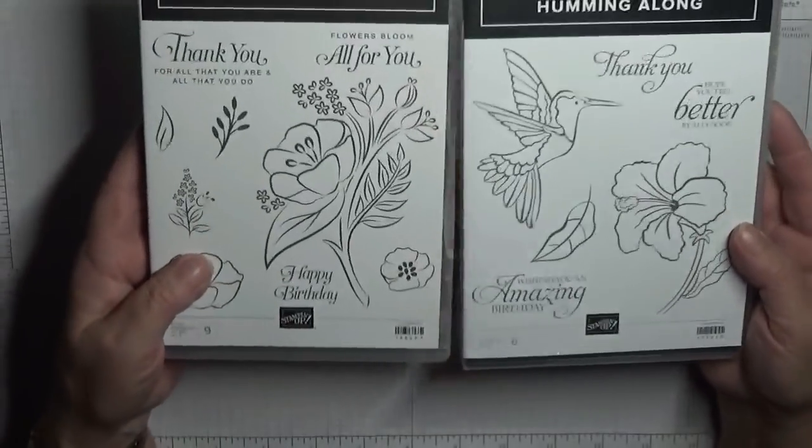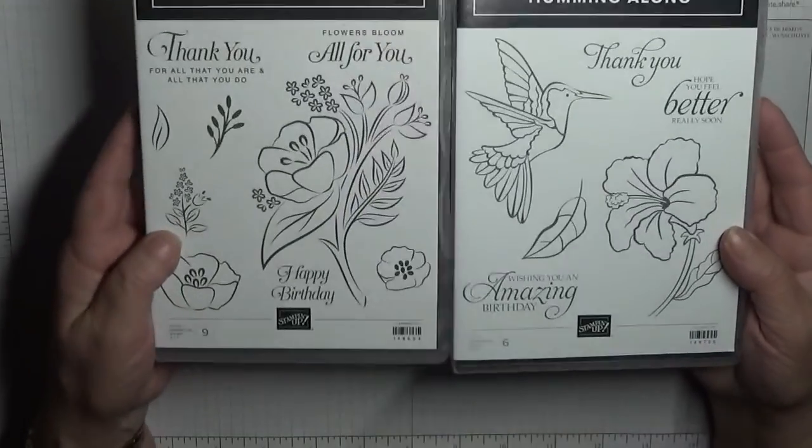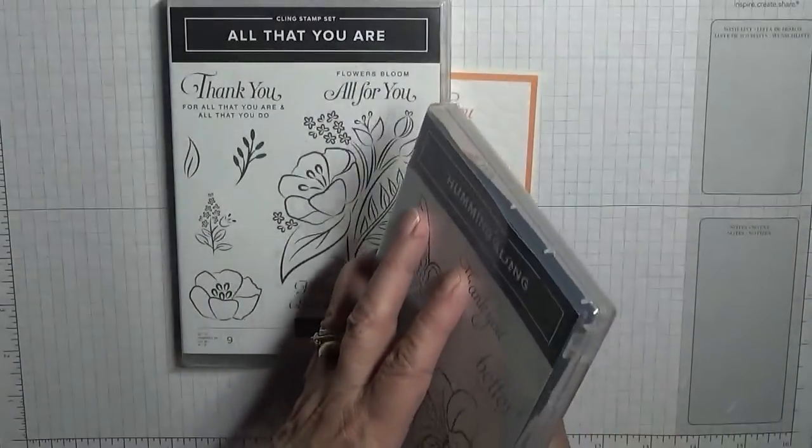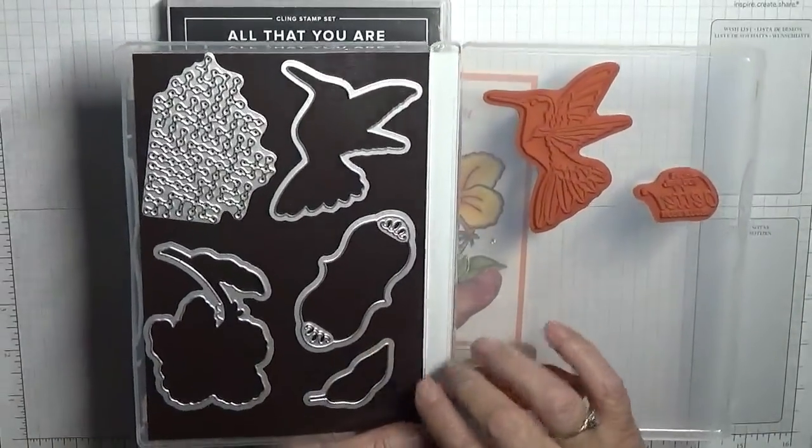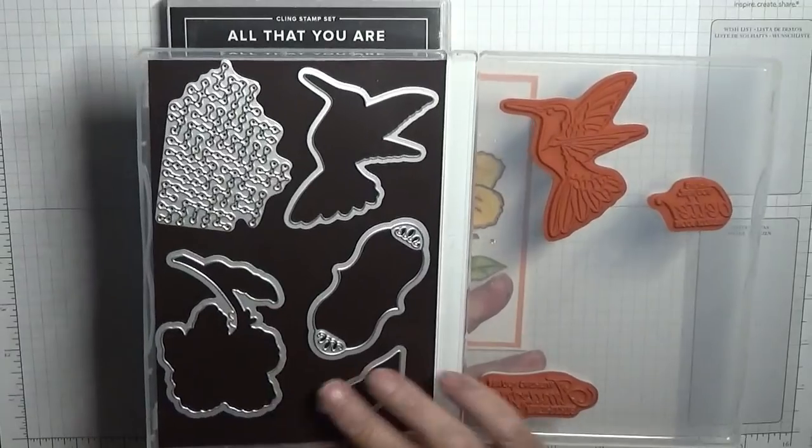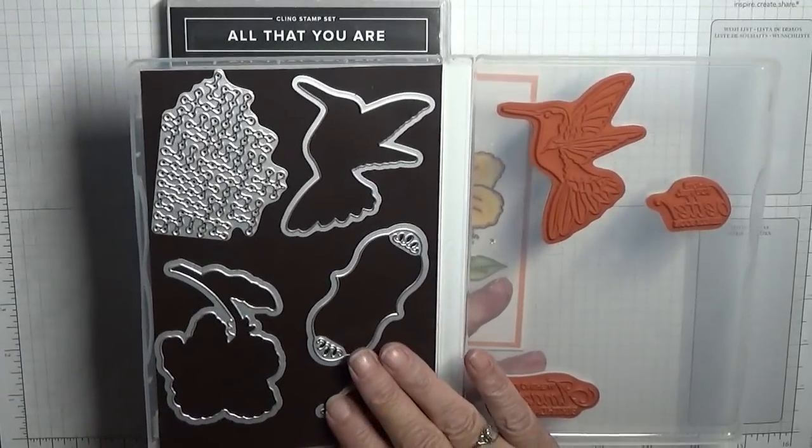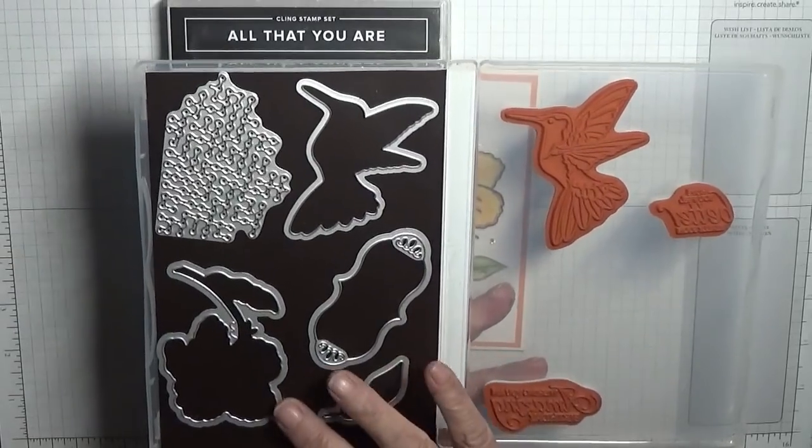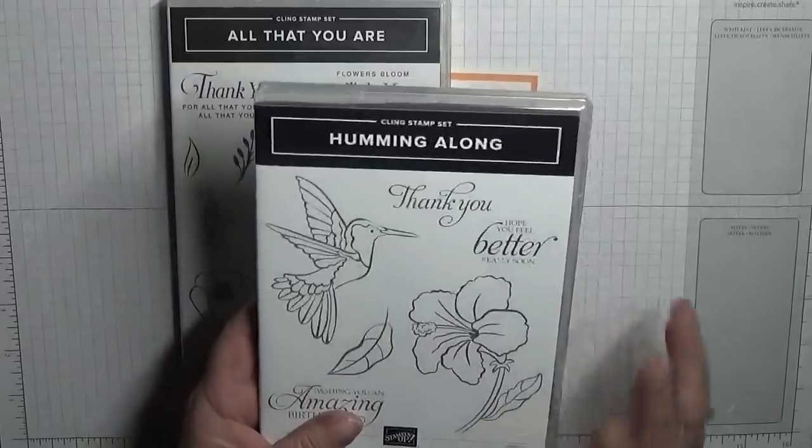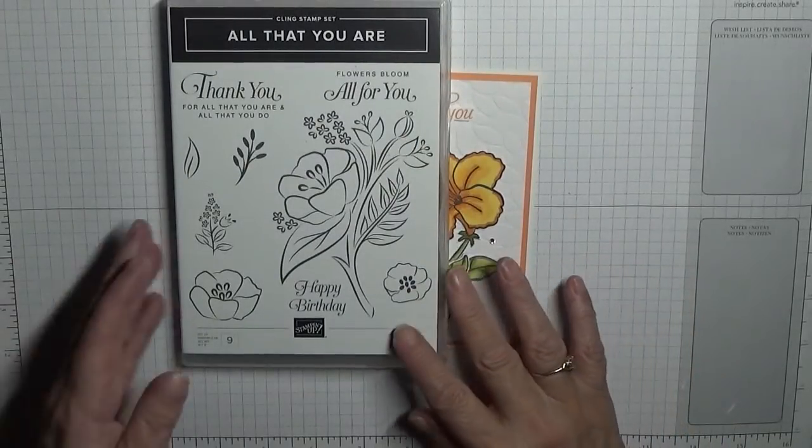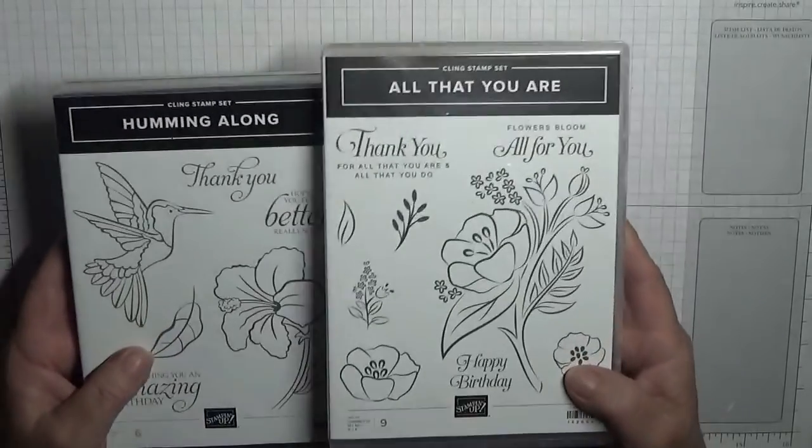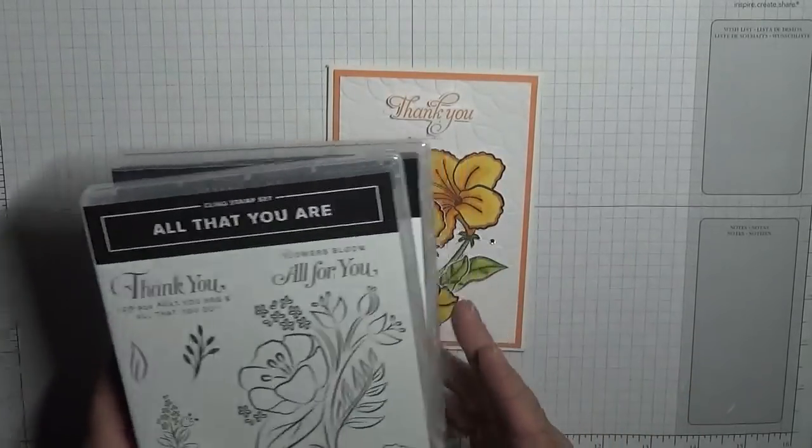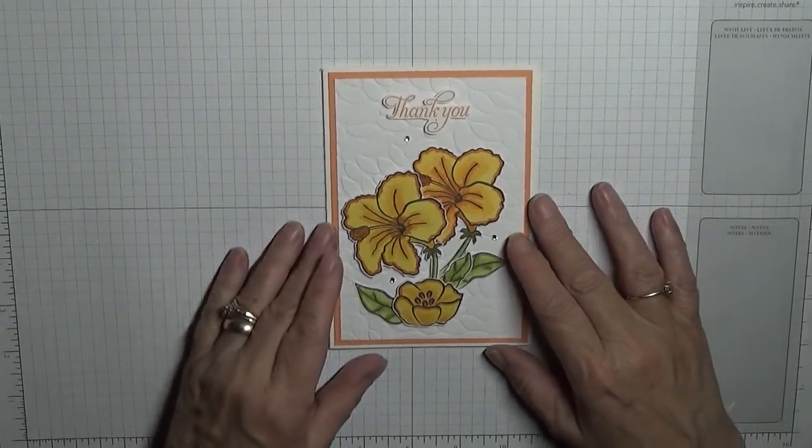These are in the new spring catalog which will be available in January for you to order and I have got the bundle in this so it's got dies to match. There's the leaf and the flower which I've used, I've already cut them out because of my back I cannot lift my Big Shot up at the moment. If you order the bundle you'll qualify for a free stamp set from the Celebration which have got some lovely stamps.